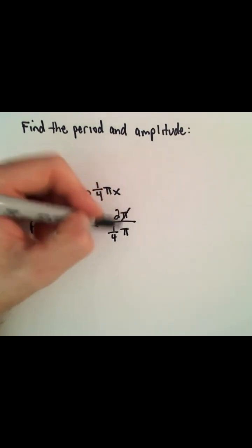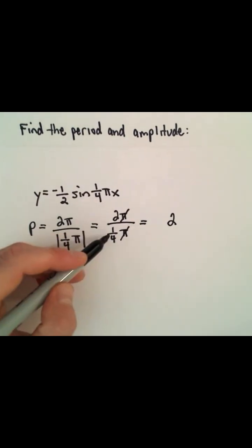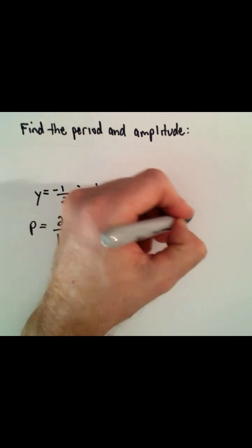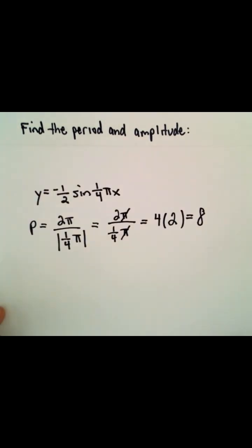Well, we can cancel out the pi's, and we've got two left in the numerator. Dividing by one-fourth is the same thing as multiplying by four. So you'll have four times two, where the period will equal eight.